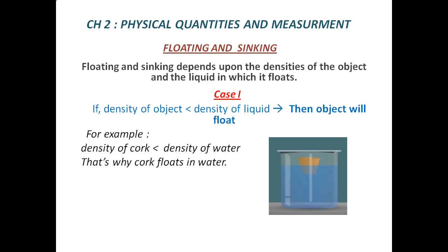If the density of the object is less than the density of the liquid, then the object will float. For example, I have taken here the example of cork and water. We know that the density of cork is less than the density of water, that's why cork floats in water. I have explained this with the help of a diagram also, so children, you must draw a diagram in your notebook.